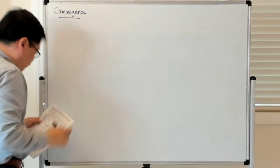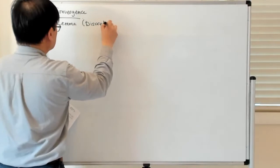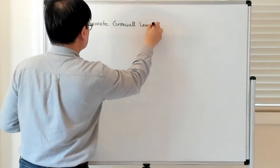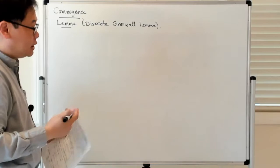In order to do this, we first have to establish a lemma called the discrete Gronwall lemma. The basic idea behind the discrete Gronwall lemma is that there are two sources of error you have to deal with at every time step.